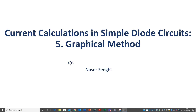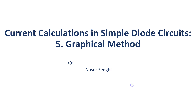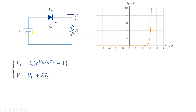In this video I will show you how to calculate the current in simple diode circuits graphically. In the simple circuit shown here we can write two equations: one is the current-voltage or IV equation of the diode, which follows an exponential function, and another is the circuit equation by writing a KVL in this loop. We have a set of two simultaneous equations, and by solving them we can find the current ID and the voltage VD. Unfortunately, one of these equations is nonlinear and therefore there is no analytical solution for this set of equations.